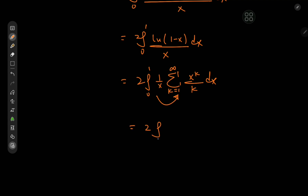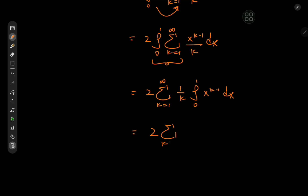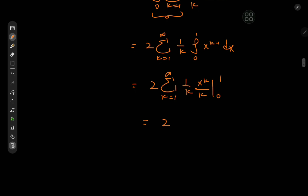Bringing the factor of 2 outside and dividing by x, we get 2 times the integral from 0 to 1 of the sum over k from 1 to infinity of x to the (k minus 1) divided by k, dx. Switching the order of operators gives 2 times the sum over k from 1 to infinity of 1/k times the integral from 0 to 1 of x to the (k minus 1) dx. This evaluates to 2 times the sum over k from 1 to infinity of 1 over k squared, which by the Basel identity equals π²/6. So I(π/2) equals π²/3.